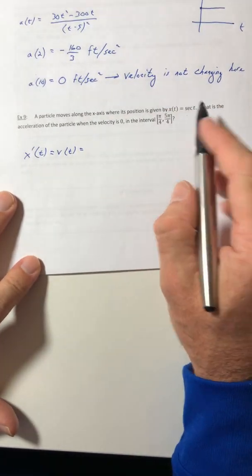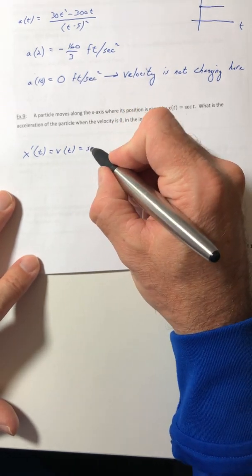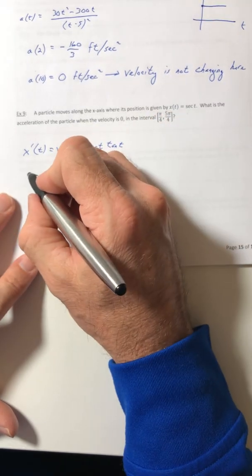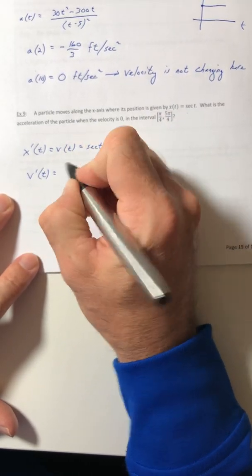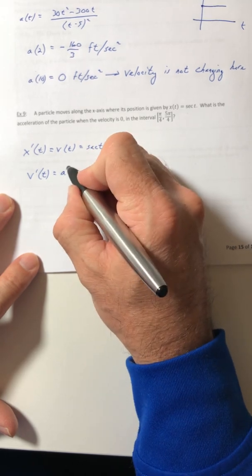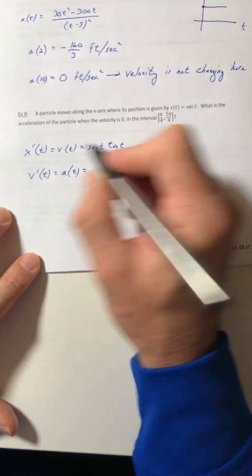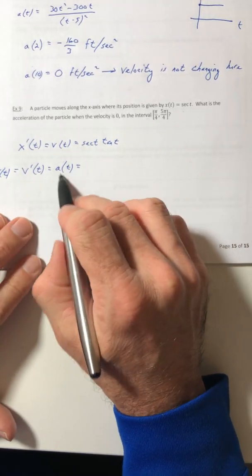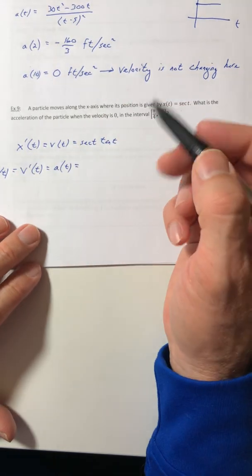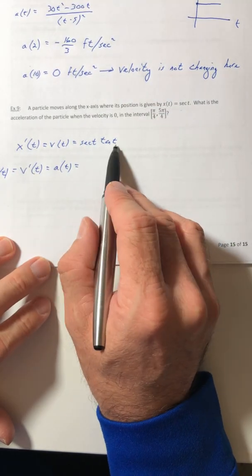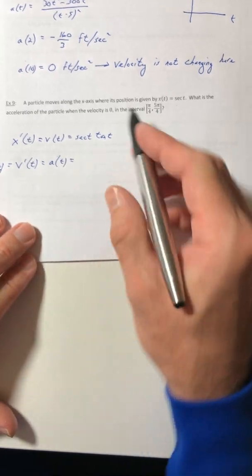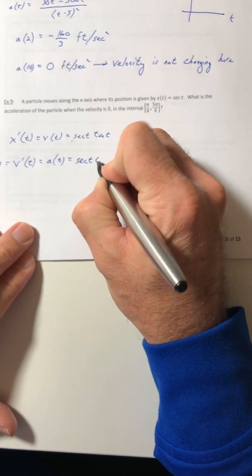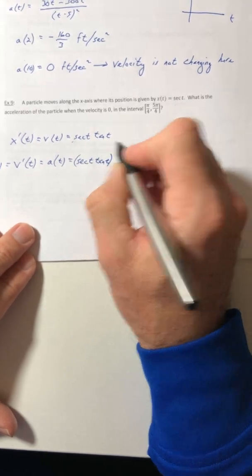So I need that to give me velocity. So the derivative of secant we saw earlier was secant tangent. So now if I do the derivative of velocity, which is the second derivative of position, that'll give me the acceleration function.